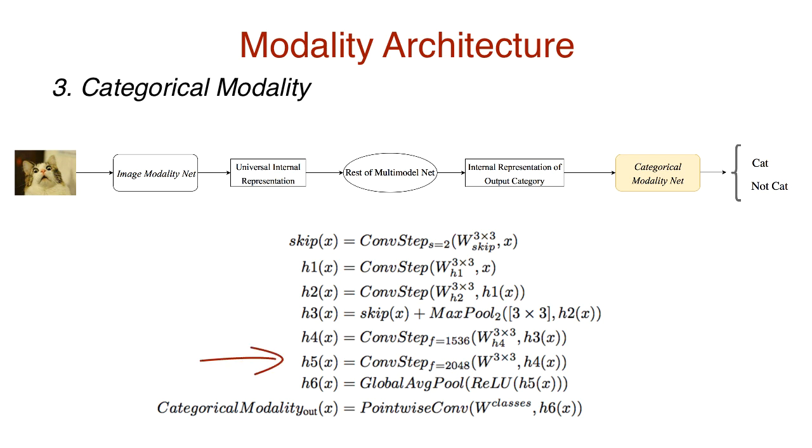Similarly, apply 2048 3x3 filters on h4 to get h5. Then apply ReLU activation, which doesn't change the shape of h5. We then downsample the features with global average pooling to get h6, and finally apply pointwise convolution on the kernel corresponding to class weights to get an output.